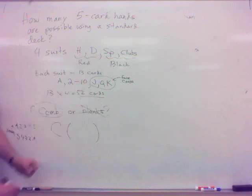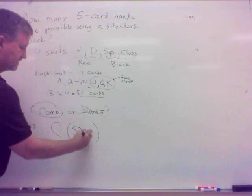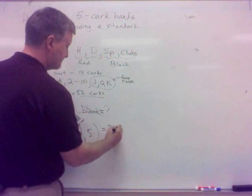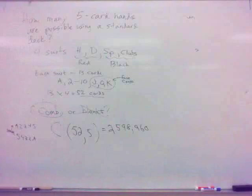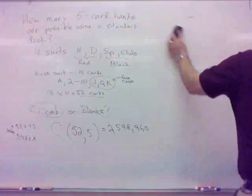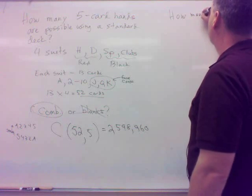Alright. So it's a combination. Now, what's my numbers? What's the first number? How many cards are there to choose from? 52. How many do I want at a time? Five. Combination 52, five. That's going to be 2,598,960. Did you get that? Okay.